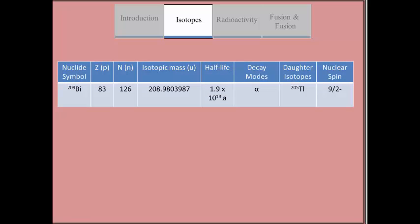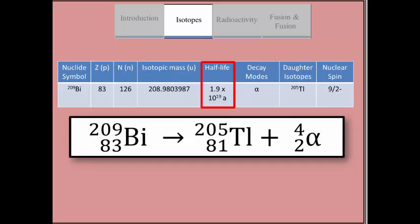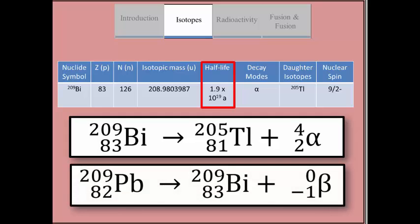Bismuth has one very long-lived isotope, bismuth-209, which has a half-life of over a billion times longer than the current estimated age of the universe. It decays via alpha particle emission and is also a beta decay product from lead-209.